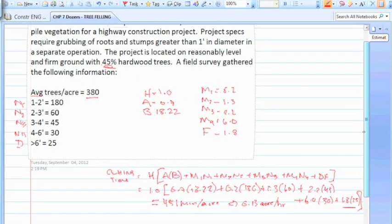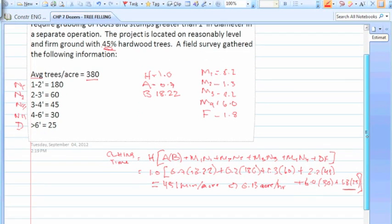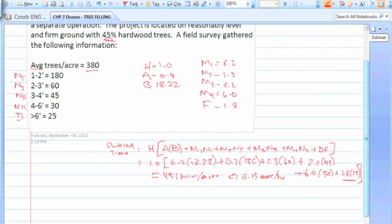So the only thing that we need to do now is account for something else that's in the problem, and that is the fact that we are going to do the grubbing of roots and stumps in a separate operation, not in one operation. So if you look at the bottom paragraph on page 201, you're going to get that you need to increase it by 50%. So just take this number 451, multiply by 1.5, and you end up with 677 minutes per acre, or 0.09 acres per hour.